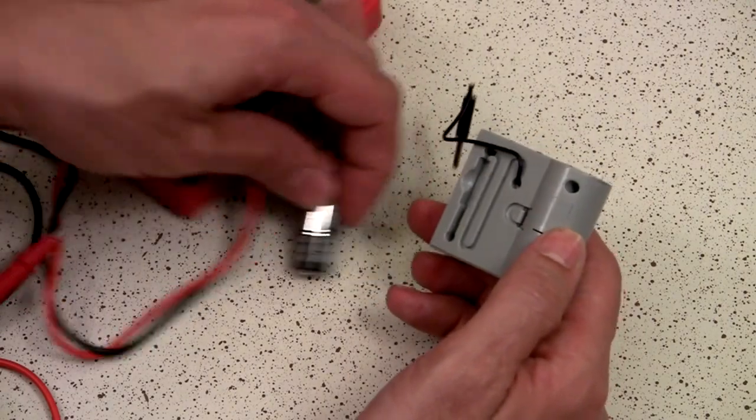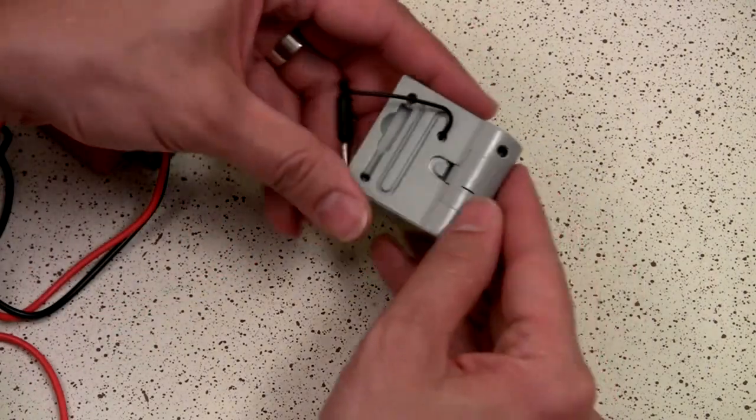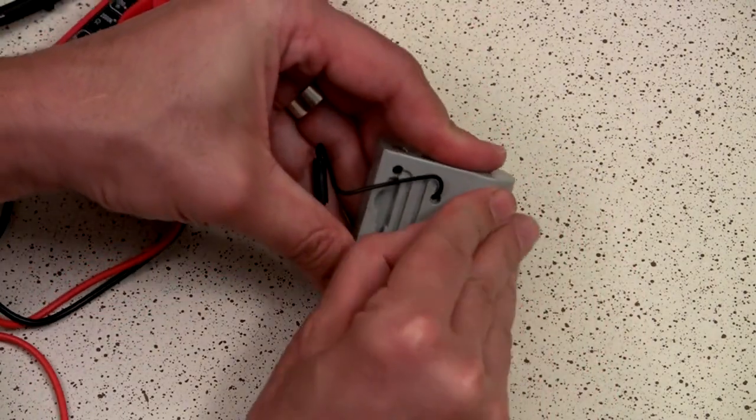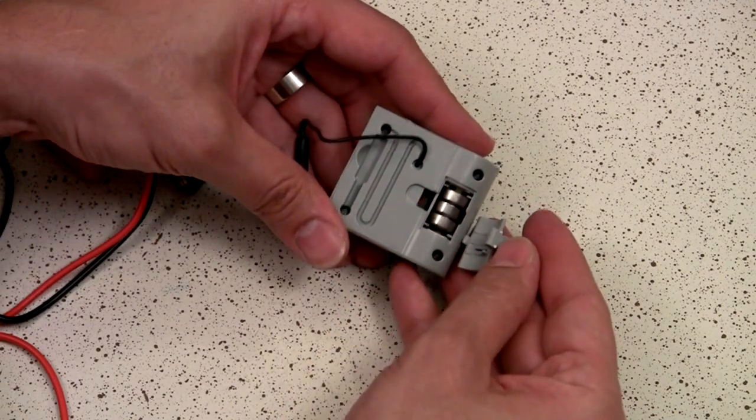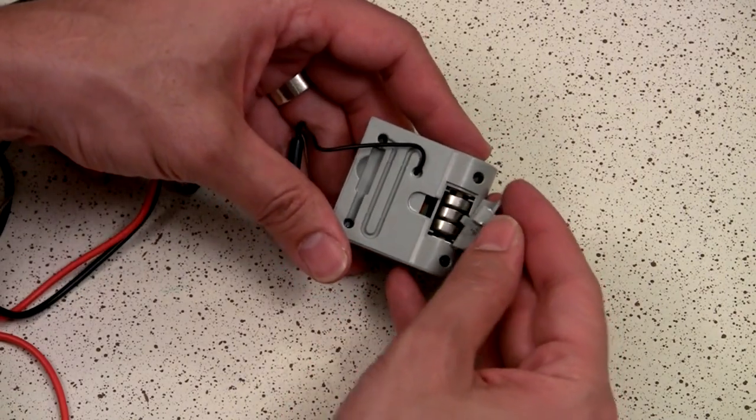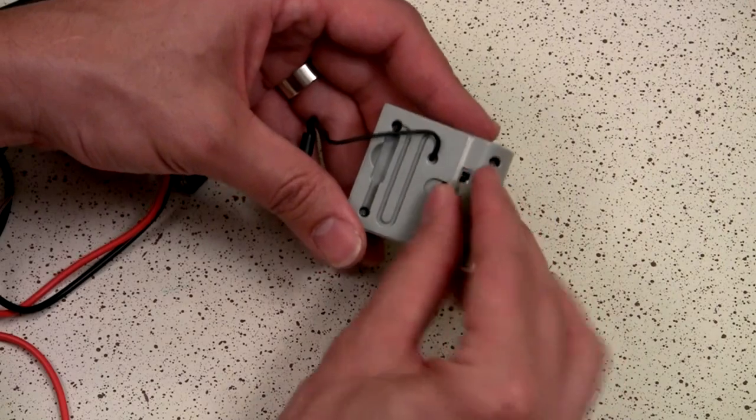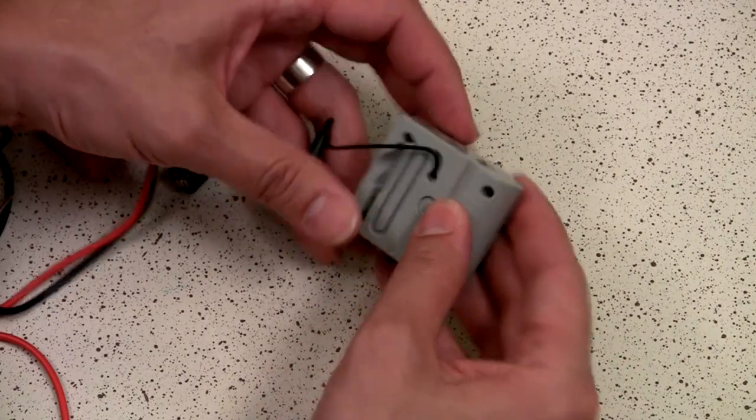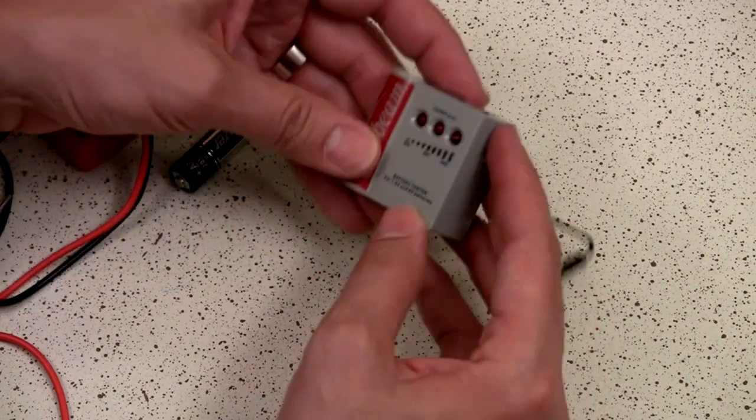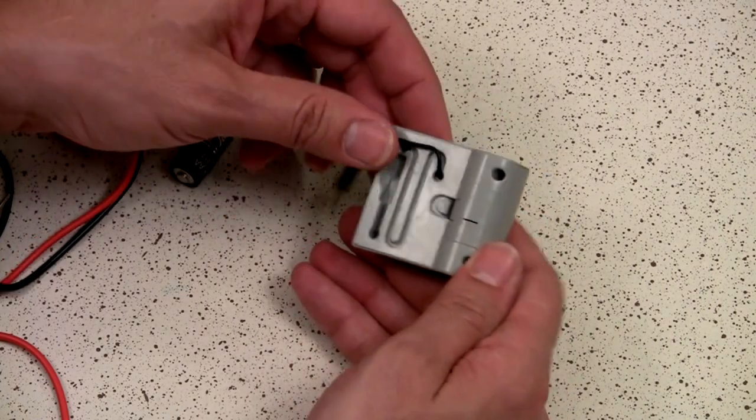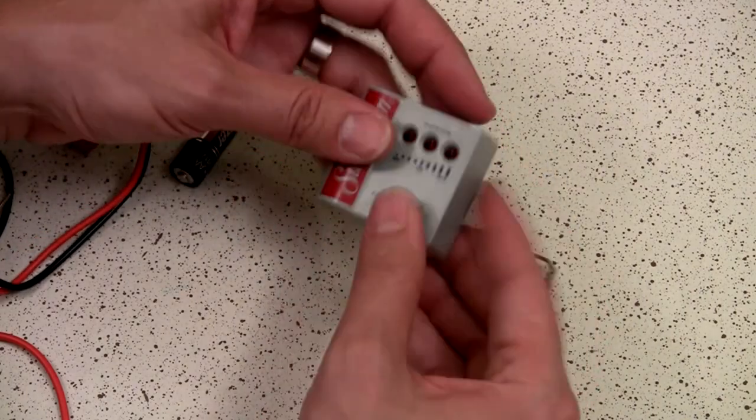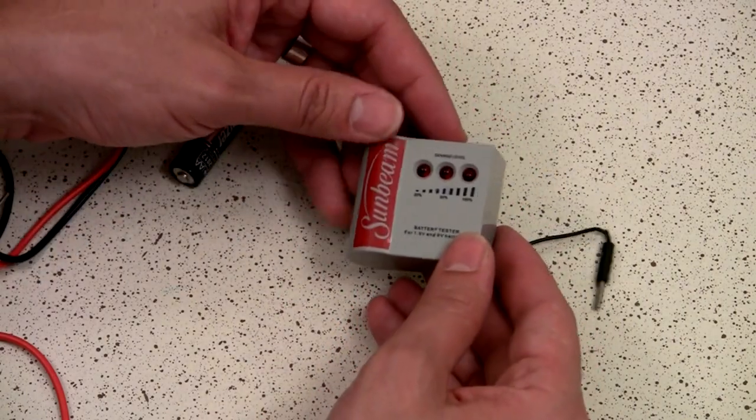Interesting thing about this battery tester is that if you open up the back, there are actually three batteries that power it—three button cell batteries. Usually these are powered by the battery you're testing. That's why these ended up in the dollar store, because they actually take batteries to run it. So eventually those batteries are going to die, but they only cost a buck.